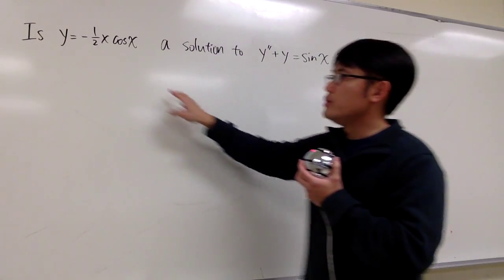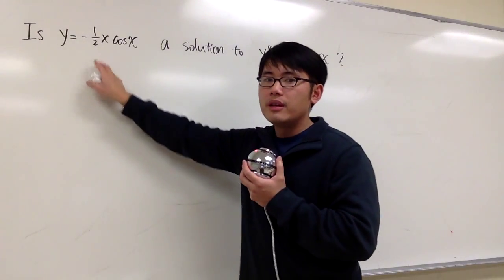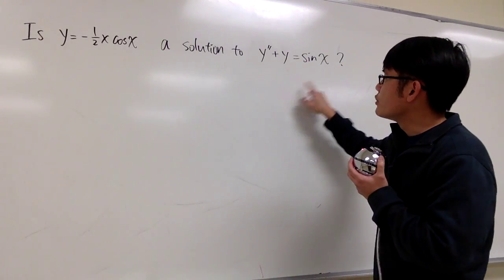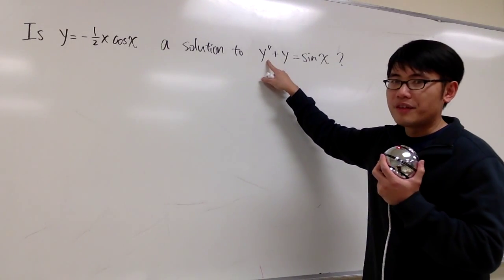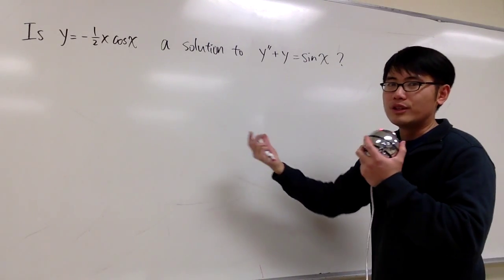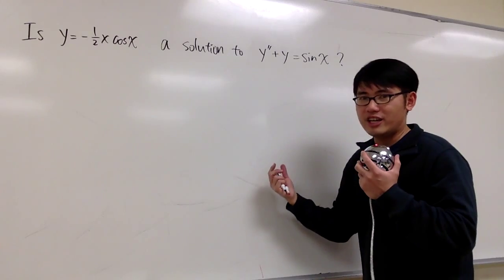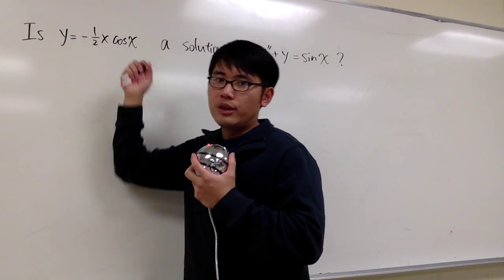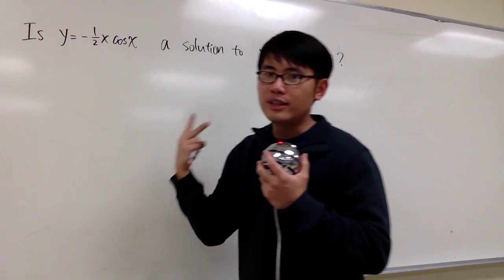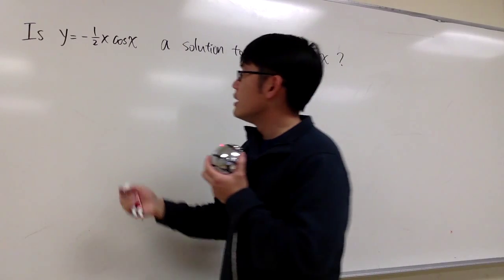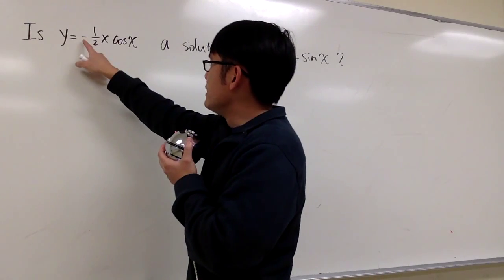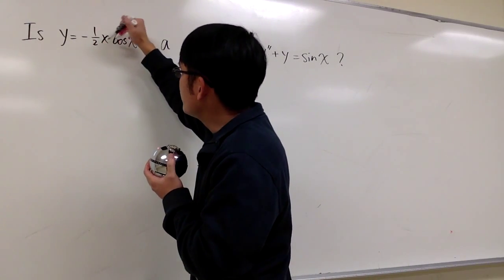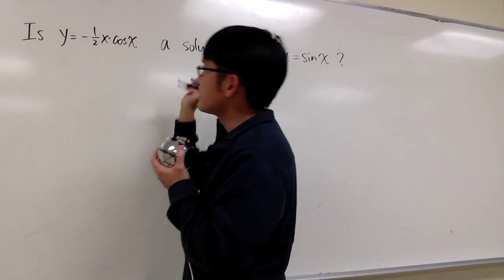We are given the original equation, but in this differential equation we must have the second derivative in order to plug in and check. So with that being said, let's look at the original and differentiate it twice. This is negative one-half times x times cosine x.